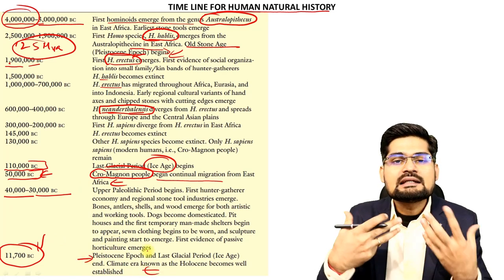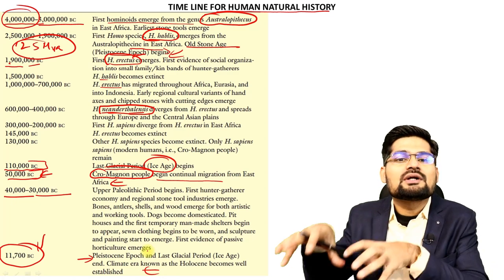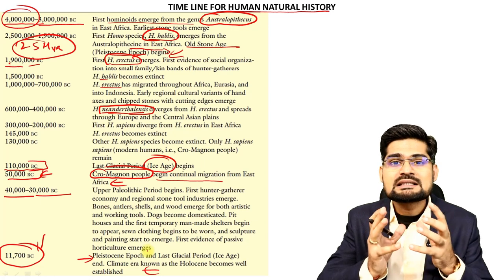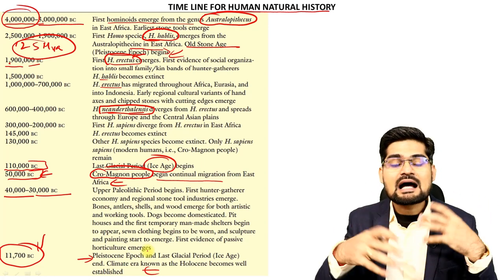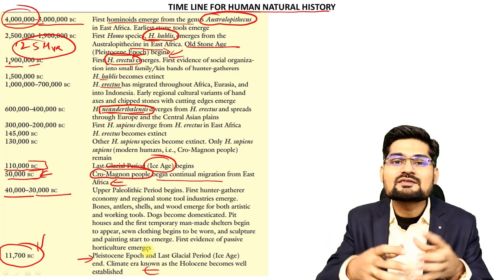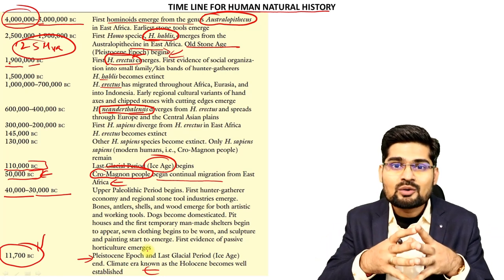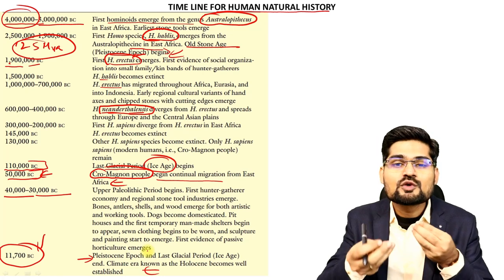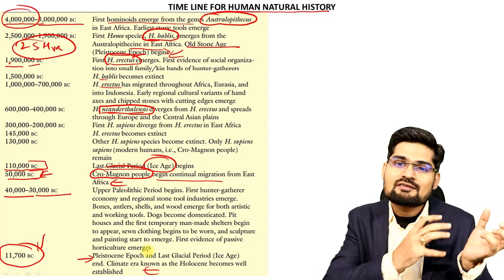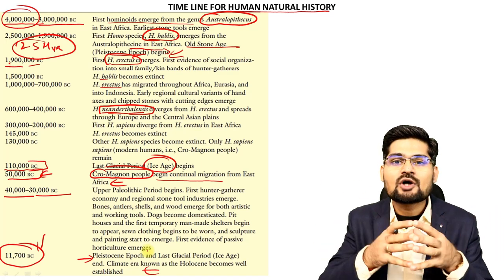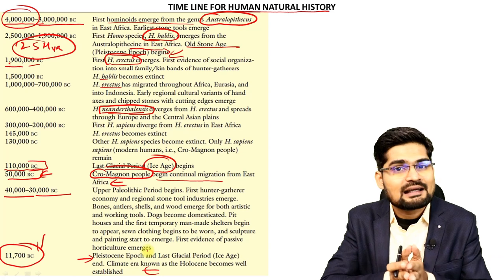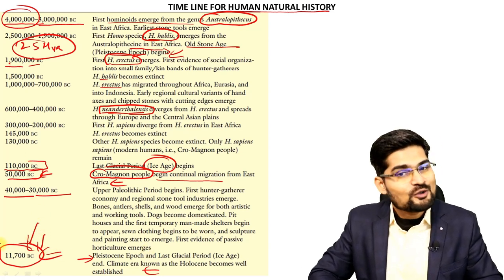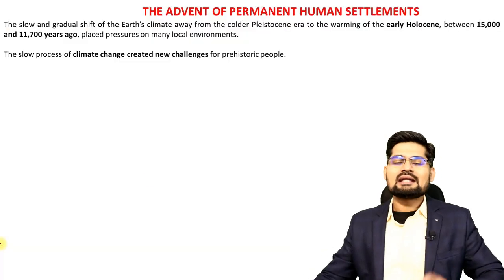Climate change had a very important role because human beings were in sync with nature. They started developing ideas of settling at particular places as resources became scarce — food was not easy to find, requiring long-distance travel. People then discovered the art of agriculture around the same time as the end of the Pleistocene and the rise of the Holocene. This marks the advent of permanent settlements.